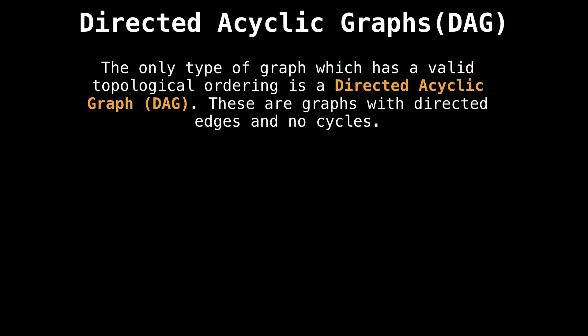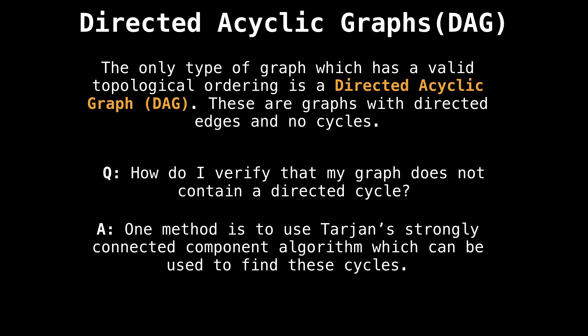The only graphs that have valid topological orderings are called directed acyclic graphs, that is graphs with directed edges and no cycles. So a natural question to ask is how do I verify that my graph does not contain a directed cycle? One method is to use Tarjan's strongly connected component algorithm, which can detect these cycles.